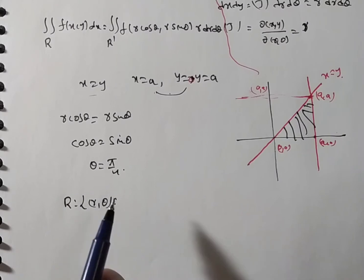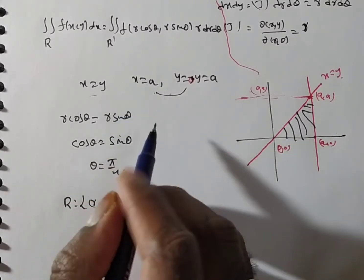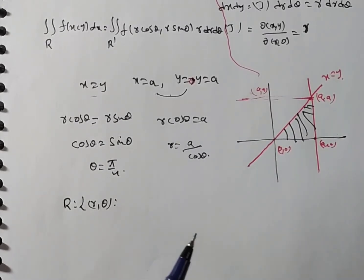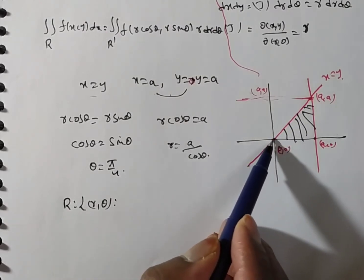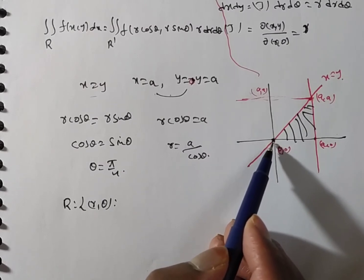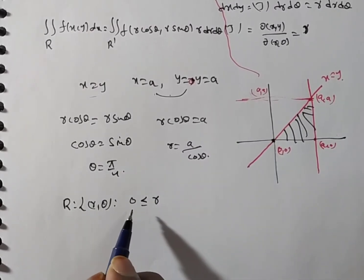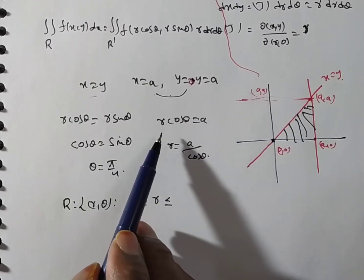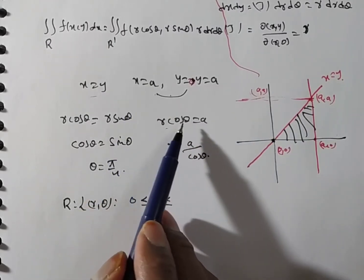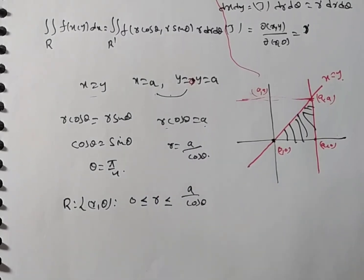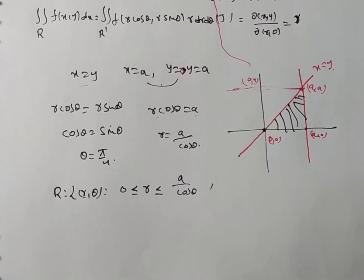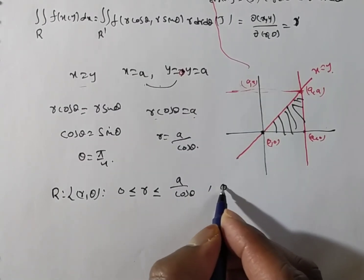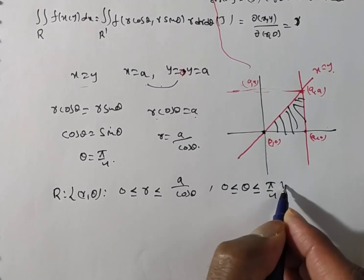Writing the limits in terms of r and θ: for r, draw a strip in the region. At the origin, r = 0, and the maximum is at the line x = a. Since x = r cos θ = a, we get r = a / cos θ. So r goes from 0 to a / cos θ. For θ, the limit is from 0 to π/4.